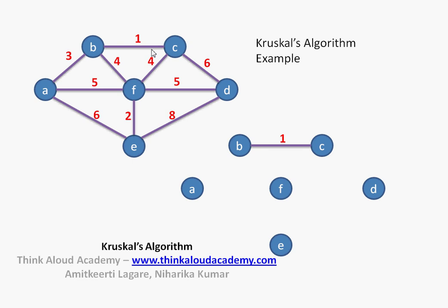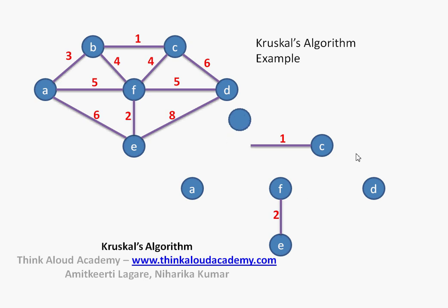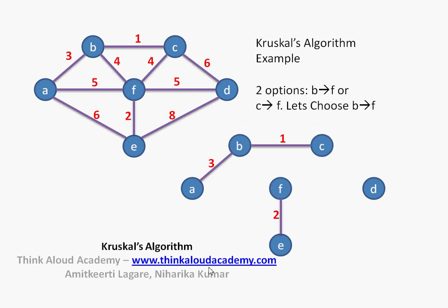In this graph, the minimum edge is 1, which is between B and C, so we connect them. The next minimum edge is between E and F with value 2, so we connect E and F. During this process you get disjoint spanning trees, but eventually all vertices get connected. The next edge is between A and B with value 3, so we join A and B. Now there are two options with value 4: B and F, and C and F. Going alphabetically, we choose B and F.